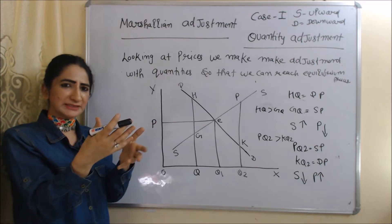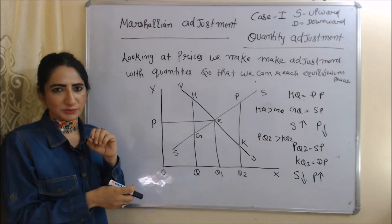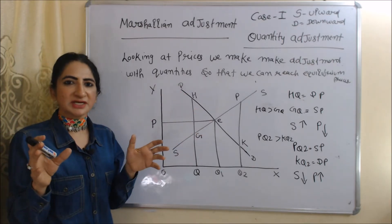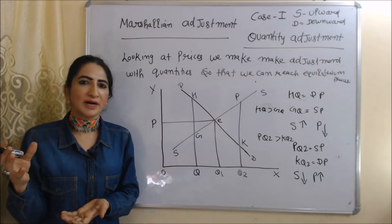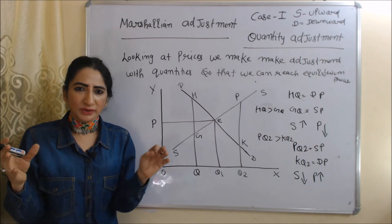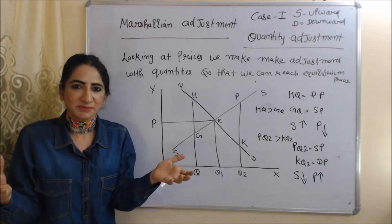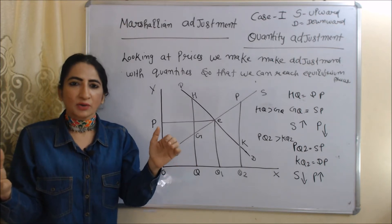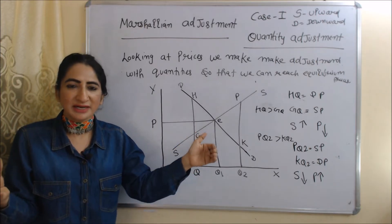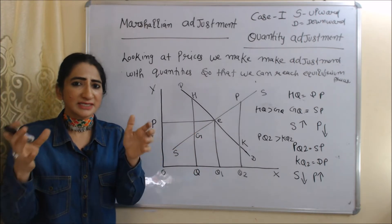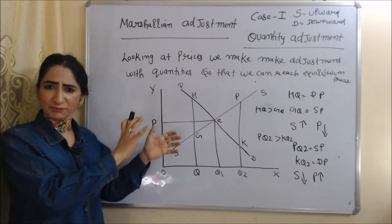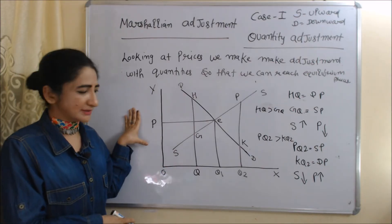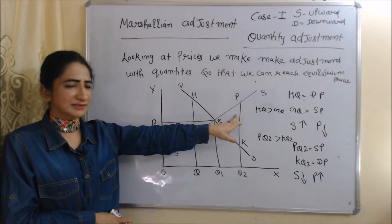Now we are going to talk about Marshallian adjustment. Case one is when the demand curve is downward sloping and the supply curve is upward sloping. Marshallian adjustment is basically a quantity adjustment — looking at the prices, we try to make adjustments with quantities so that we can reach the equilibrium price.